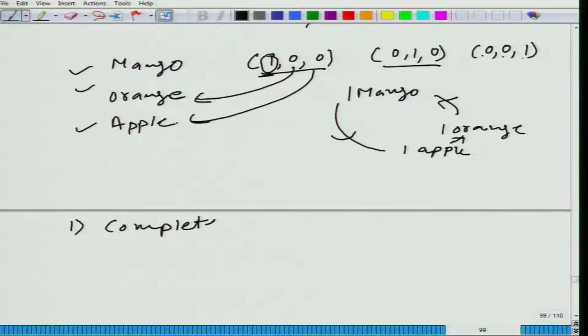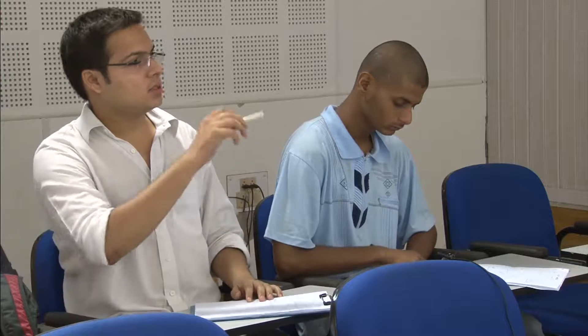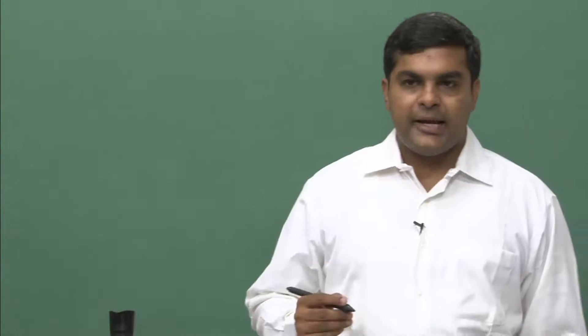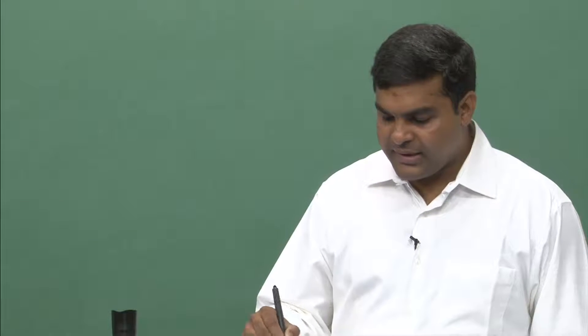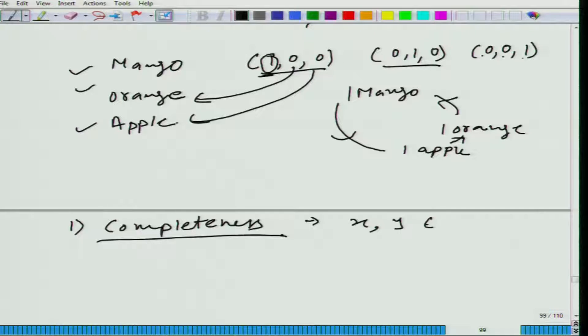The first axiom I want to talk about is completeness. What does completeness mean? Have you ever heard this term? It has nothing to do with the earlier example I gave you — I will come back to that in some other axiom. Here it is very simple. Let me start with two bundles: x and y are any two bundles in the consumption set.